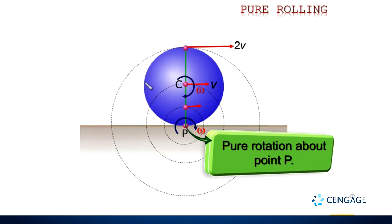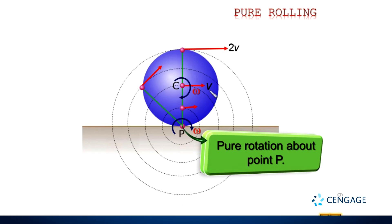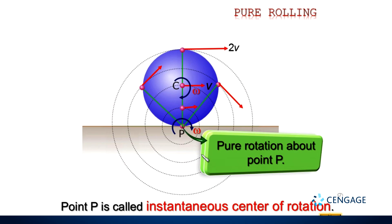Similarly, for any other point on the rigid body we can find the radius of rotation about P and determine the velocity vector tangential to the circular path. Point P is momentarily at rest and the total body rotates about it — P is called the instantaneous centre of rotation. As the rolling object moves, the next point of the rim comes in contact with the ground and becomes the new instantaneous centre of rotation.